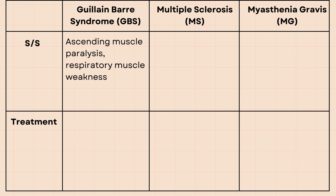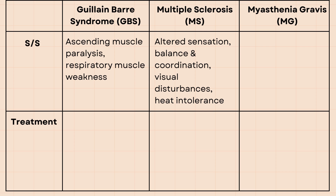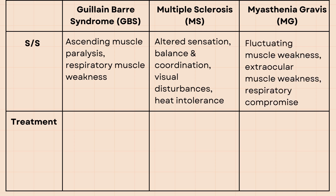Multiple sclerosis results in altered sensation, balance and coordination, visual disturbances, and heat intolerance, in which overheating can make symptoms worse. Myasthenia gravis, on the other hand, causes fluctuating muscle weakness and involves the extraocular muscles, causing ptosis or drooping of the upper eyelid. Myasthenic crisis is a complication of myasthenia gravis that results in respiratory failure and requires intubation and mechanical ventilation.